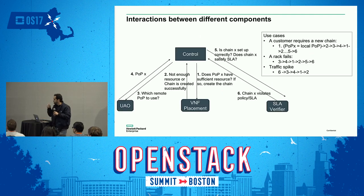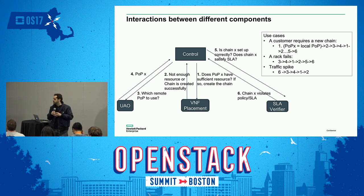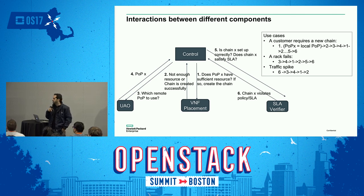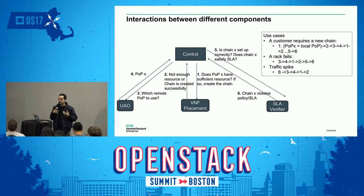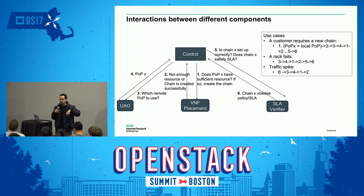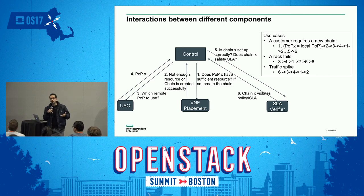With the information we obtain — which I'll detail in the next slide — we can do several things. For example, if a customer wants to create a new chain, we use information from these three modules to figure out which POP should serve those service function chains. On the fly, we can create more SFC instantiations in other POPs, and if we have multiple options around the network, we determine in real-time which one is best suited to serve a specific flow.